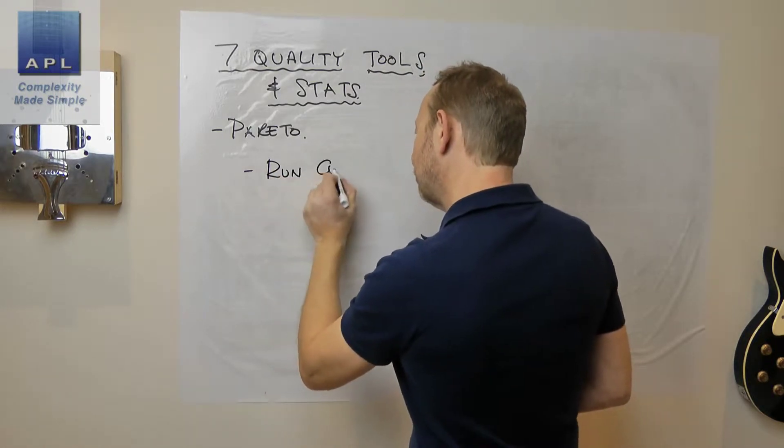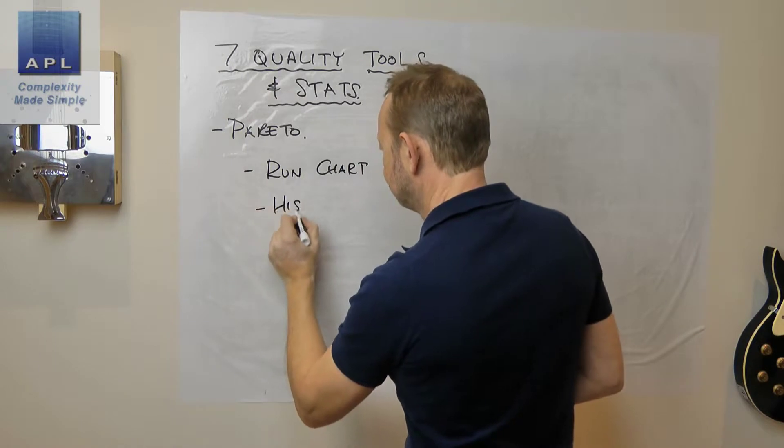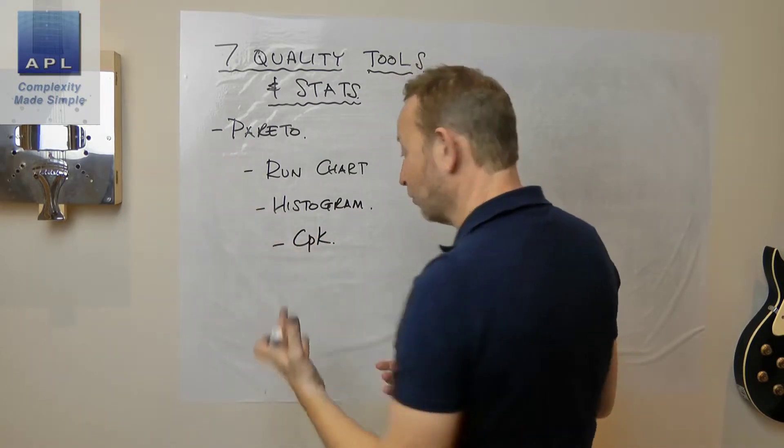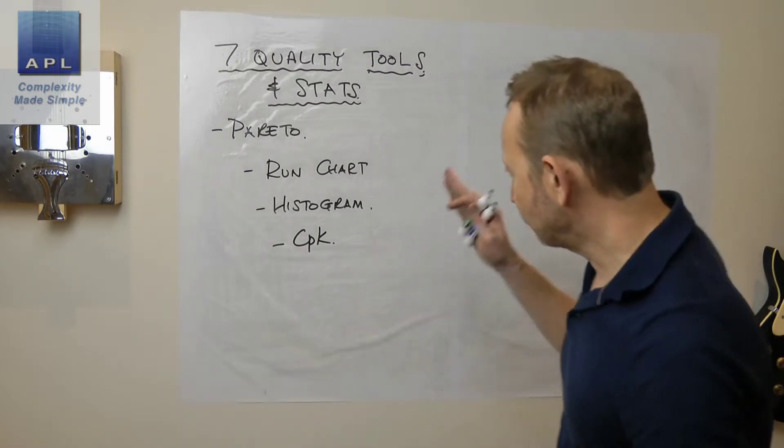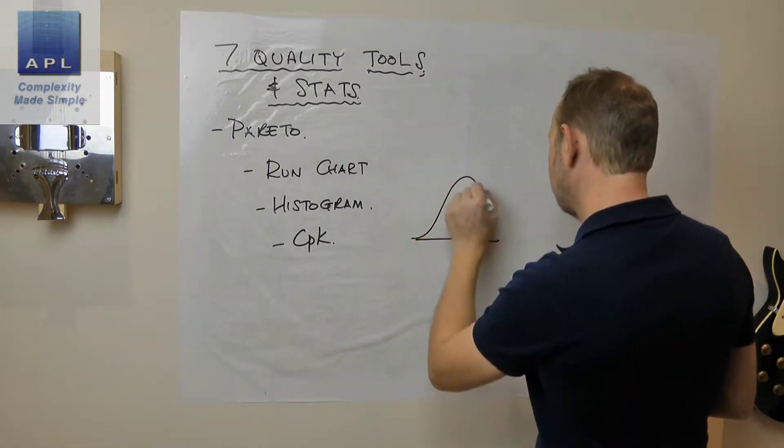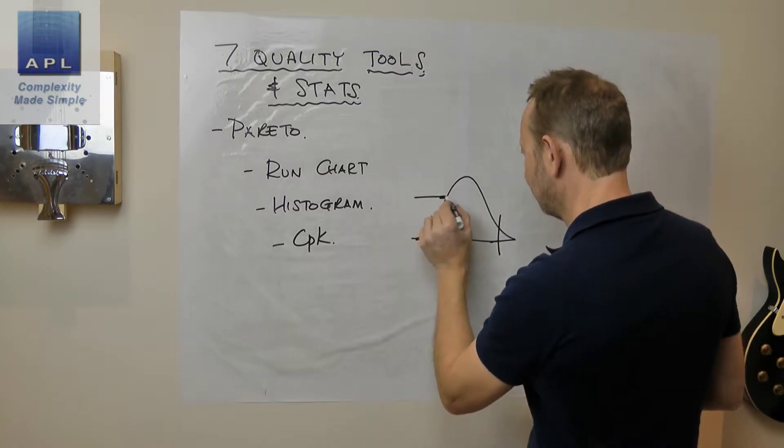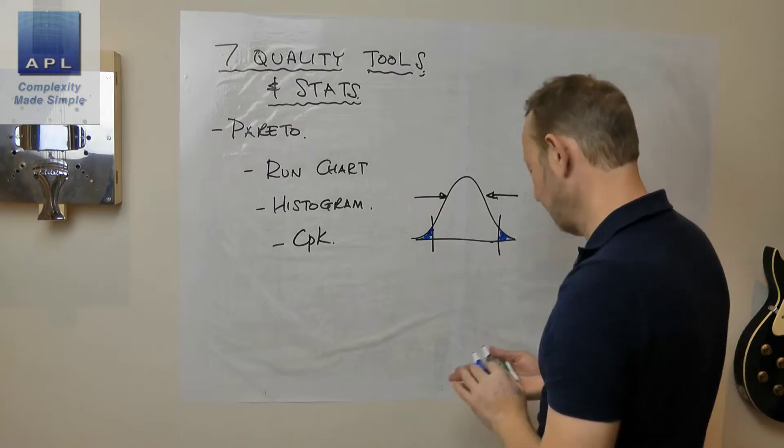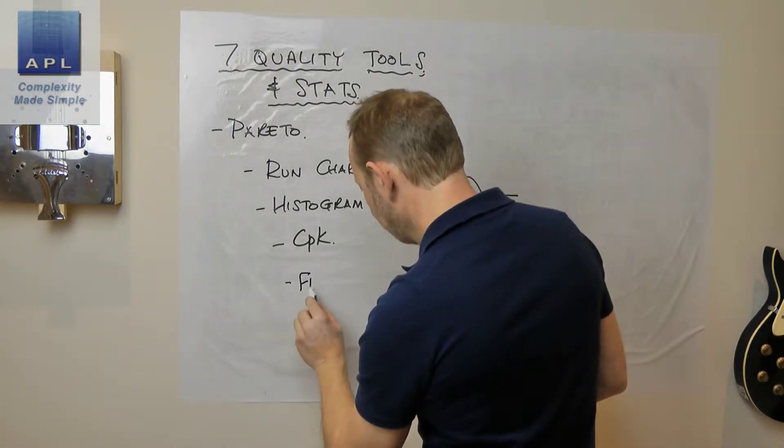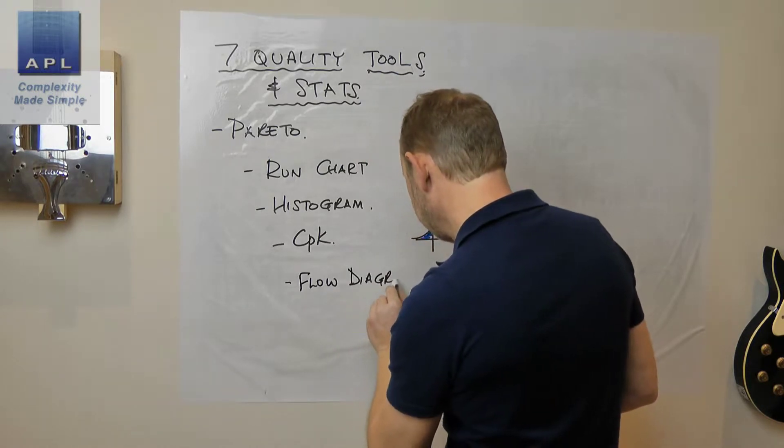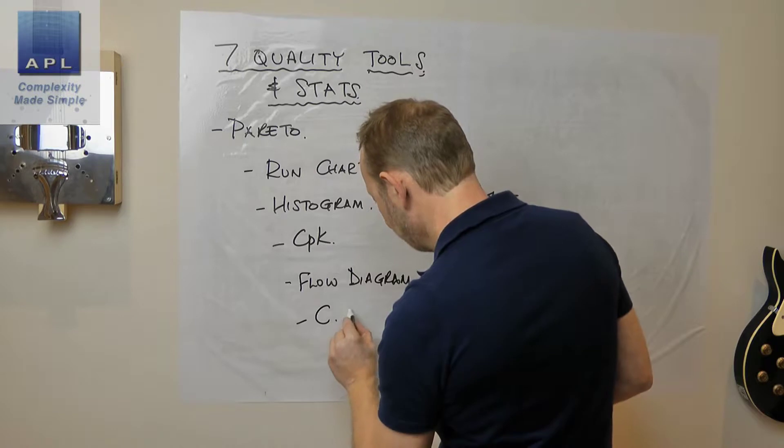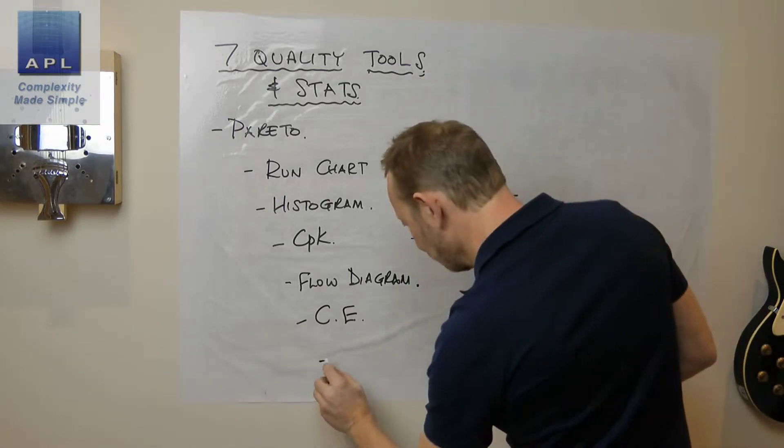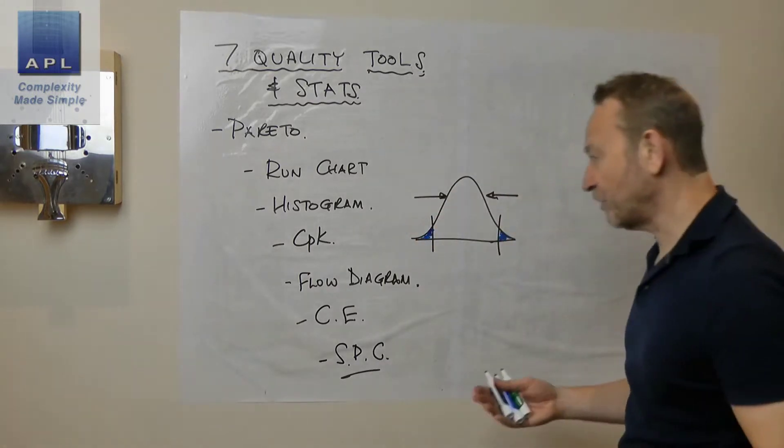I typically go like this: I'm going to go run chart, histogram. I find out that my process has got too much variability and I need to squeeze this thing in. So we have a problem here. What am I going to do next? Well, I'm going to use the flow diagram, I'm going to use cause and effect diagram and I'm going to squeeze that in. I'm going to create a control plan and then finally once I've got the process under control I'm going to lock it in with an SPC chart.